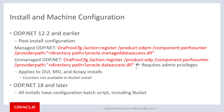For ODP.NET 18 and later, specifically starting with ODAC 18c Release 2, a configuration batch script is provided. That batch script is available with all four types of installs, including NuGet, making it easier to set up your counters.